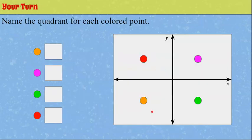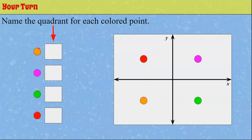Now it's your turn. I would like you to pause the video and name the quadrant for each of the coordinating colors. We have four colored dots on our coordinate plane — these are your points — and I want you to fill out what quadrant each colored point lies in. Please pause now and come back and hit play when you're done.